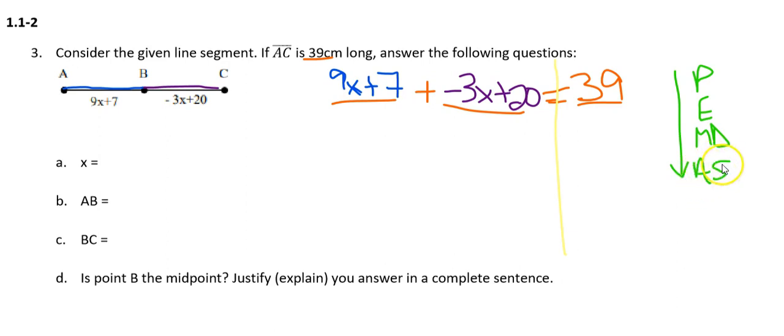We're going to combine like terms. The term 9x means I'm counting x's and I have 9 of them. Negative 3x is also counting x's, with negative 3 of them. If I have 9 things called x and negative 3 things called x and combine those, that gives me 9 minus 3, which is 6x. I also have plus 7 and plus 20 — both counting ones — so 7 plus 20 gives me 27. So the left side simplifies to 6x plus 27.